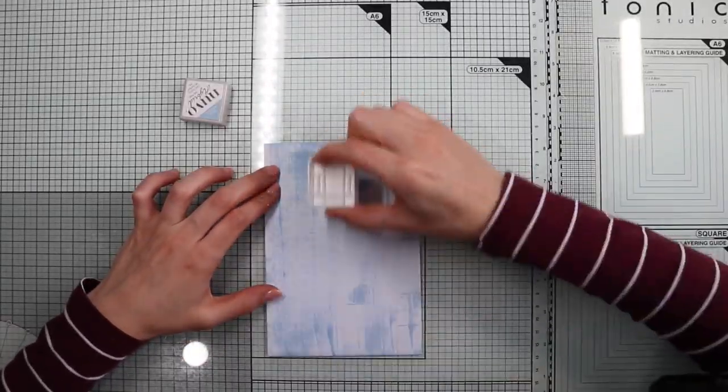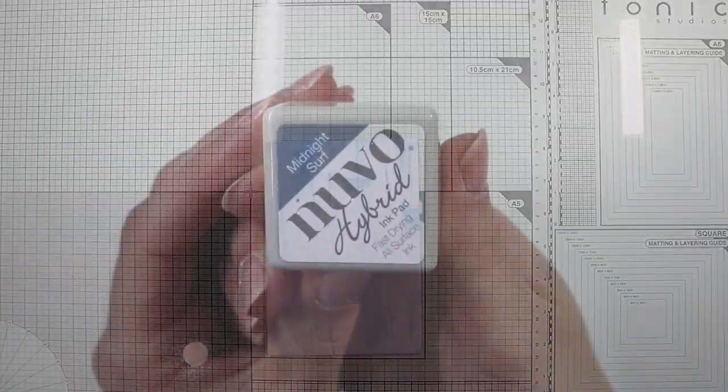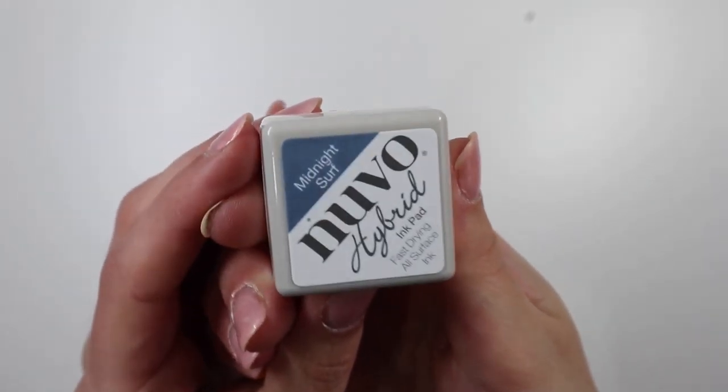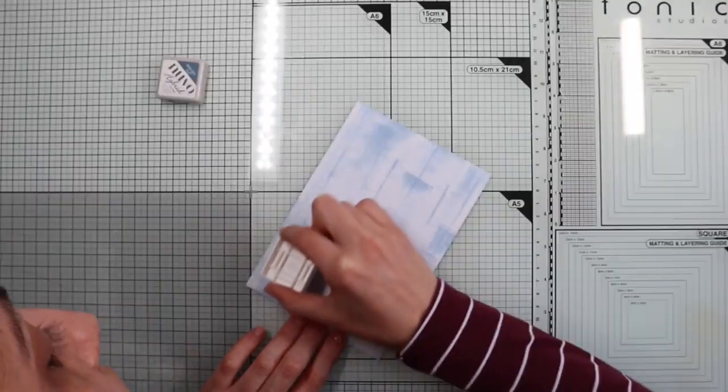Then, if we also want to define some darker veins, we can simply introduce a darker color.